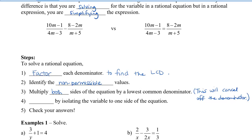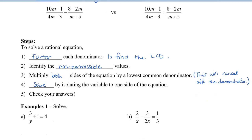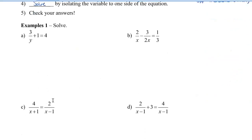Fourth, we're going to solve by isolating the variable to one side of the equation, similar to the techniques that you've learned in previous grades. And then always check your answer. If your answer happens to be a non-permissible value, then it's going to be no solution for that value. So let's take a look at some questions.